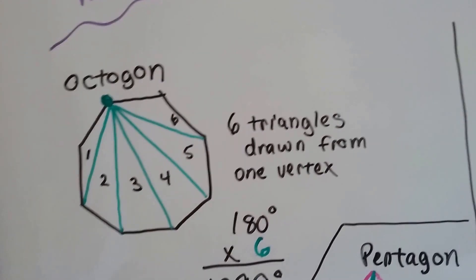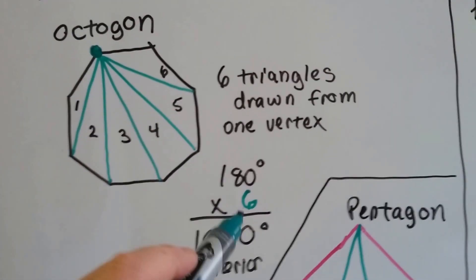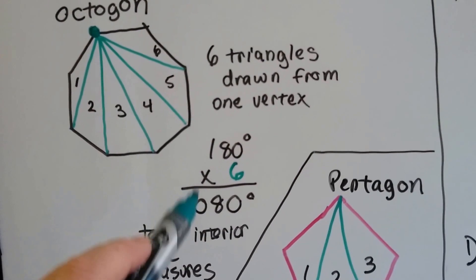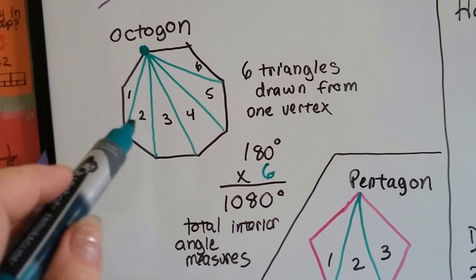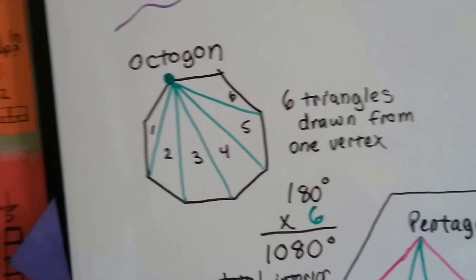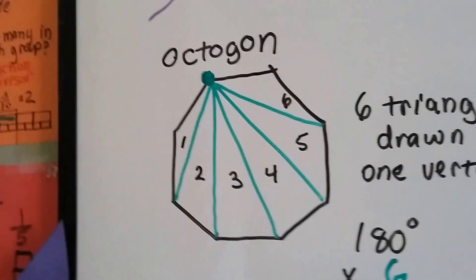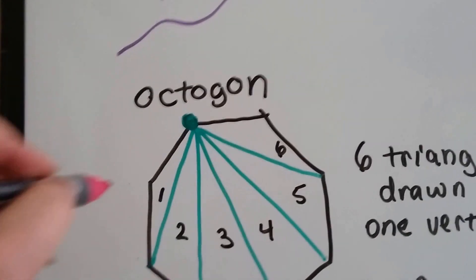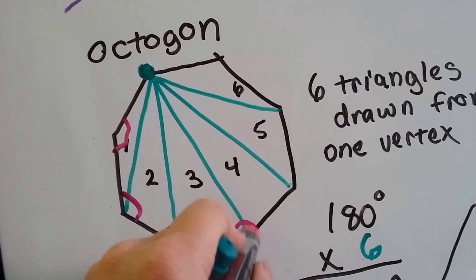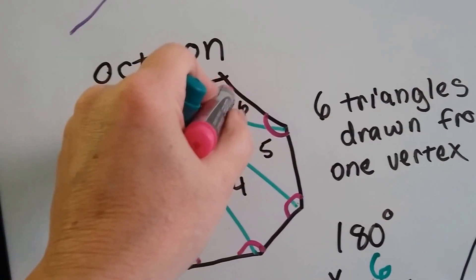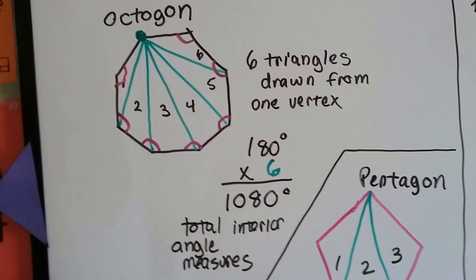I didn't connect back to the adjacent ones because that created the triangles. I counted how many triangles I made: 1, 2, 3, 4, 5, 6, and I multiplied that number by 180 degrees. This tells me the total interior angle measures of an octagon. If you were to measure each interior angle of this octagon and add them all up together, it would total 1,080 degrees.